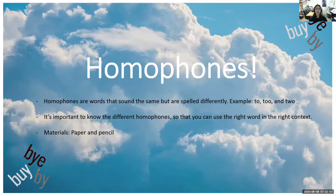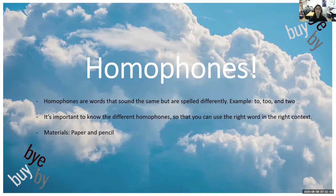Our presentation is on homophones. Homophones are words that sound the same but they're spelled differently. An example could be two, too, and to — like 'I'm going to the store,' 'I like ice cream too,' and 'there are two ice cream cones.' All of those sound the same but they're all spelled differently, used in different contexts.